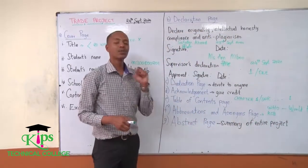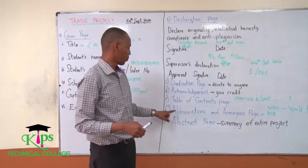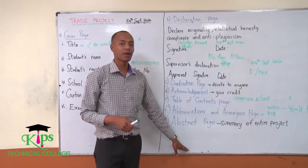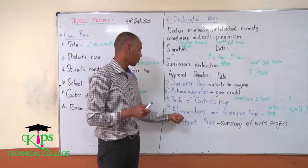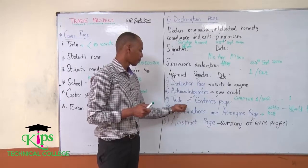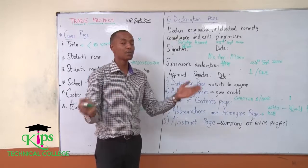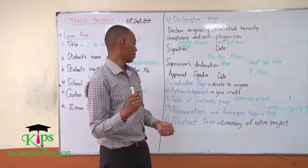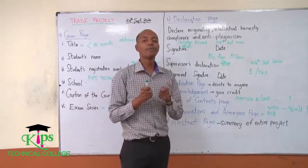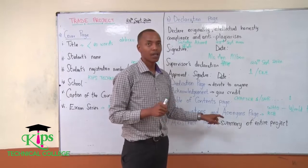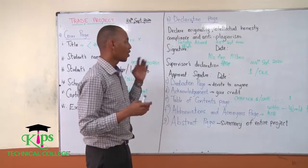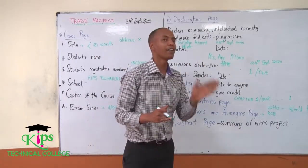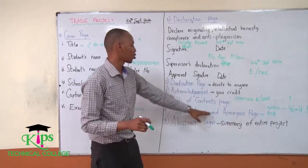Finally, you have the abstract page. This is the page that most people usually miss. Most people, after putting the table of contents, jump directly to chapter one, which is not correct. After writing the table of contents and abbreviations, you have to add the abstract page. Every project must have abbreviations and acronyms — acronyms are words that are usually shortened, for example 'UNESCO' for the United Nations Scientific and Cultural Organization.